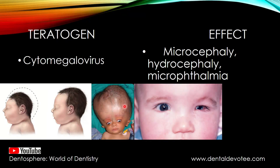Hydrocephaly is the accumulation of fluid in the ventricles of the brain, raising intracranial pressure, and a gross oversized skull is seen — that is hydrocephaly. Micro-ophthalmia is a condition where one or both of the eyes may be smaller in size and may also lack function at times. These are all caused by cytomegalovirus.